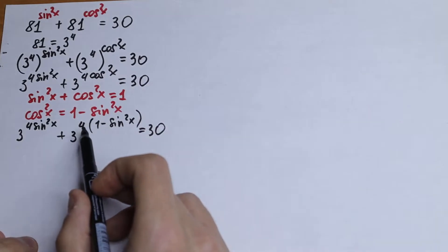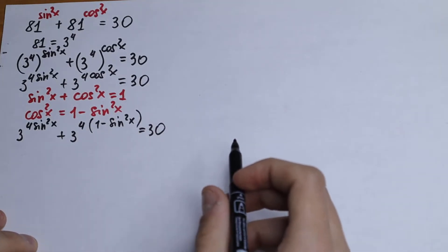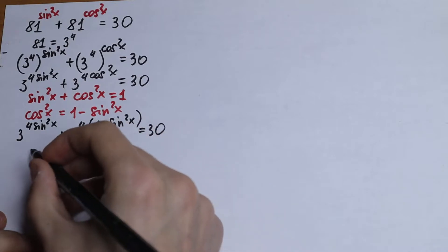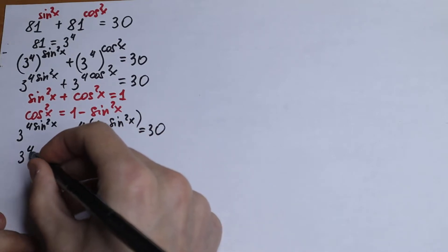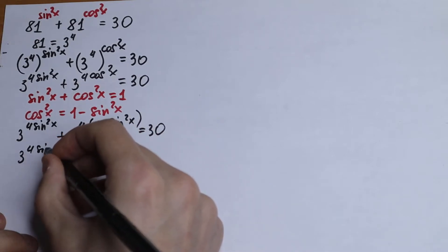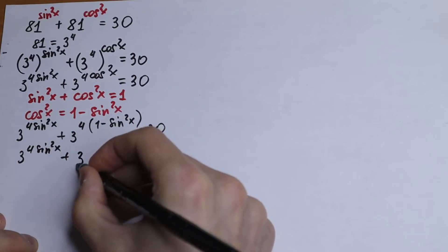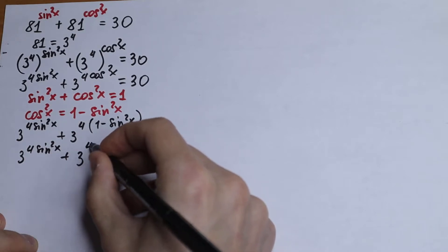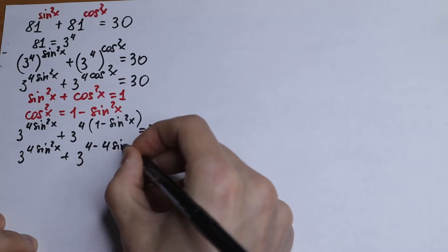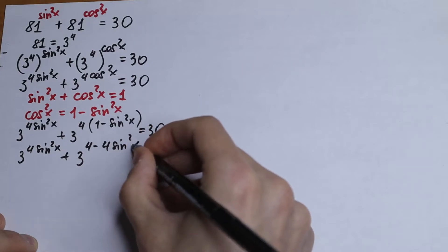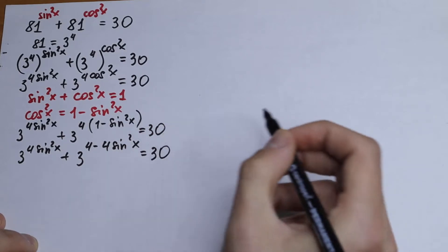We can multiply out the parenthesis. We will have 3 to the power 4sin²x, plus 3 to the power (4 − 4sin²x), equal to 30. Just multiplying our parenthesis by 4.